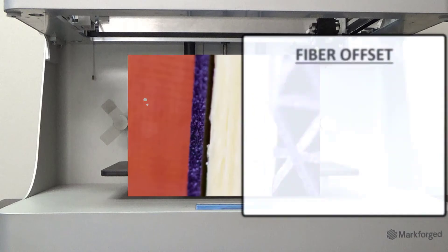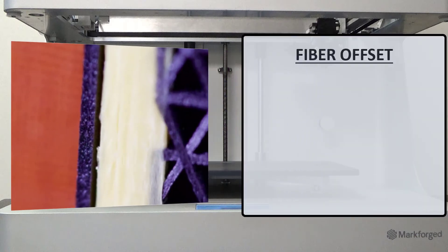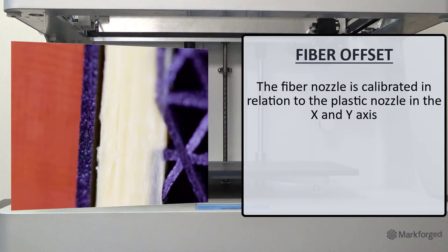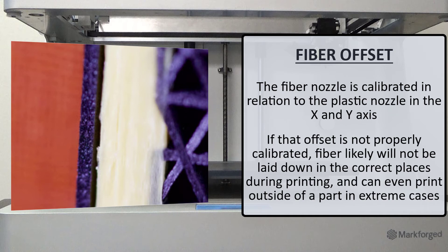What about fiber offset issues? The fiber nozzle is calibrated in relation to the plastic nozzle in the X and Y axis. The printer contains an offset value for where the fiber nozzle is located in space, and that offset value is taken into account during the printing operation. If that offset is not properly calibrated, fiber likely will not be laid down in the correct places during printing.